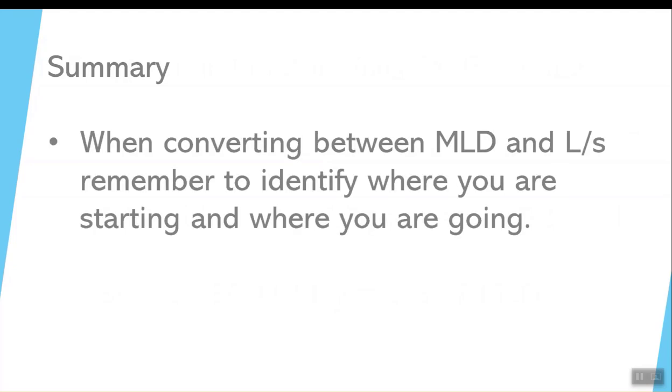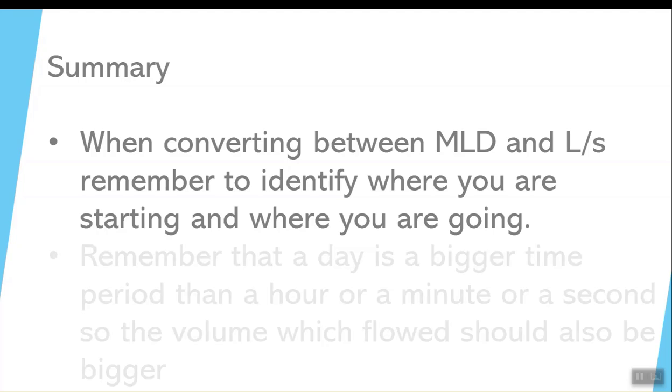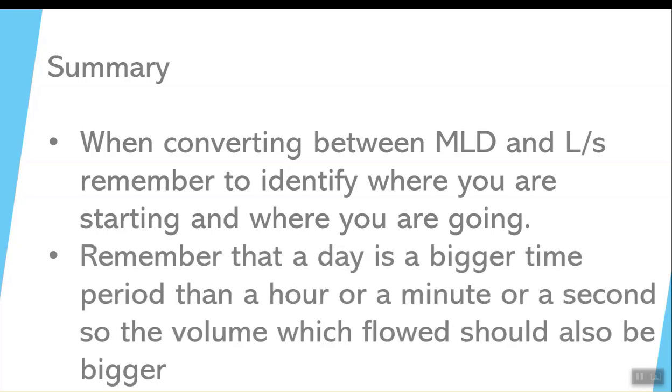So in summary, whenever you're converting from one flow rate to another time period—megalitres per day, big volume, big time, converting to small quantity, small time—make sure you know where you're starting and where you're going. Then divide the big problem into little mini steps so you can take care of one step. In this case, it was converting how many hours, minutes, and seconds in a given time period, then converting your volumes to the appropriate amount. Remember this last point: the bigger the time period, like an hour is bigger than a minute, a minute is bigger than a second, the more flow you're going to have.